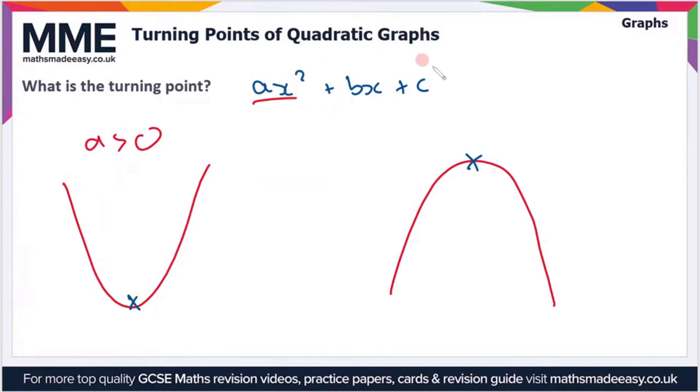And if the a value is less than zero, you get a graph that's this shape, so that's sort of n shaped or cap shaped, however you want to describe it is fine. But the point is if a is greater than zero you'll have a minimum point, and if a is less than zero you'll have a maximum point.